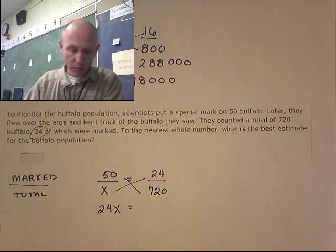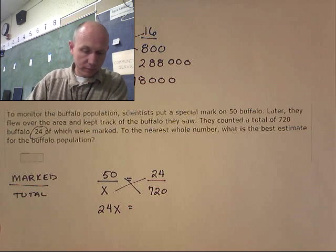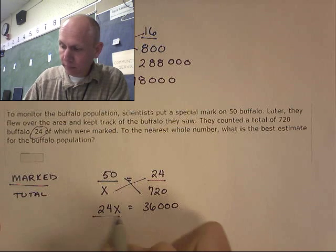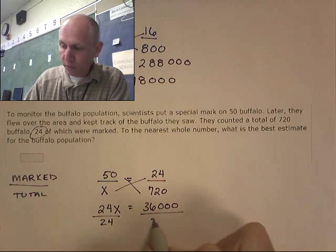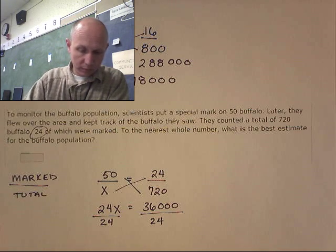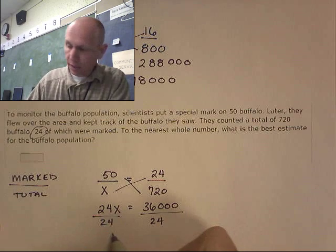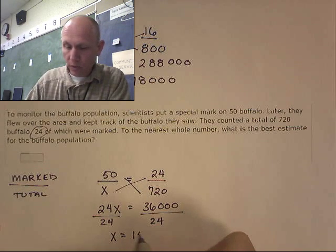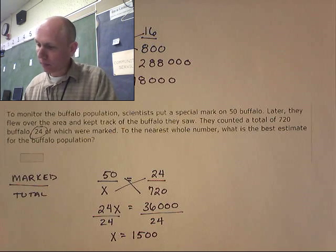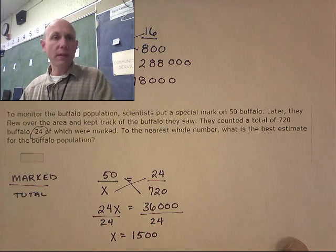24x equals 36,000 divided by 24. 24 gives us x equals 1,500. So, there are 1,500 buffalo.